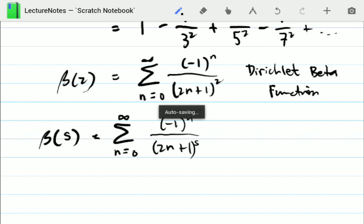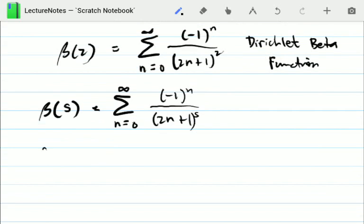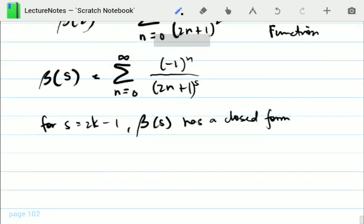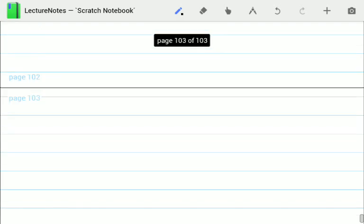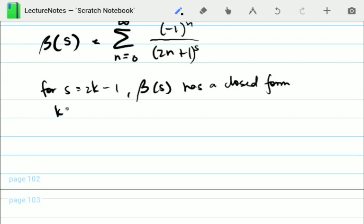That's the Dirichlet beta function. And the interesting thing about the Dirichlet beta function is that for S of the form 2k minus 1, where k is an integer greater than or equal to 1, beta of S actually has a closed form. What does that mean? It means you can actually get the sum of the series into a single term. That's what we mean by having a closed form. So for example, what's the simplest case? Let's say k is equal to 1. When k is equal to 1, S is of course equal to 1.